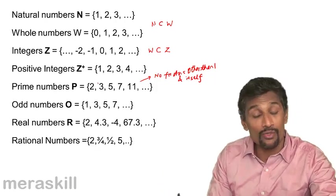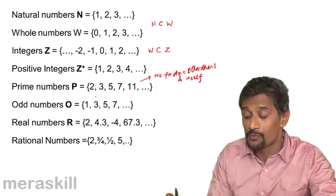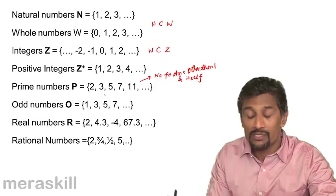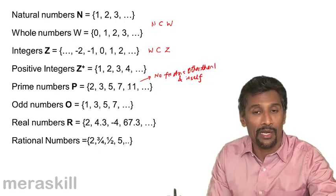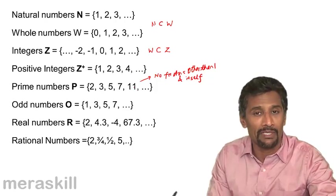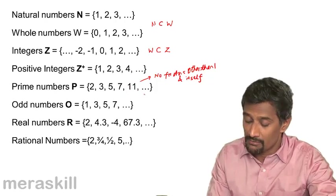For example, 2 is divisible only by 1 and 2. There is no other number which divides it. The same for 3, 5, 7, 11. If you observe, all prime numbers except 2 are odd. Natural numbers which are not prime numbers are called composite numbers.